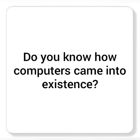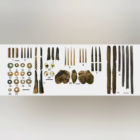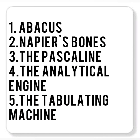Do you know how computers came into existence? Earlier, people used stones, bones, sticks, and even fingers for counting. These means of counting took a long time and could only handle small numbers, leading to many careless mistakes. So, scientists went on searching for a simpler, faster, and more accurate way of doing calculations. Some devices were invented: the Abacus, Napier's Bone, Pascaline, Analytical Engine, and the Tabulating Machine. Let us see them one by one.